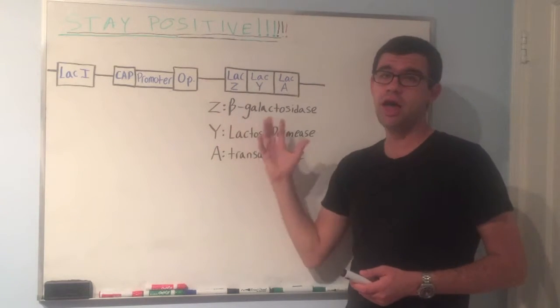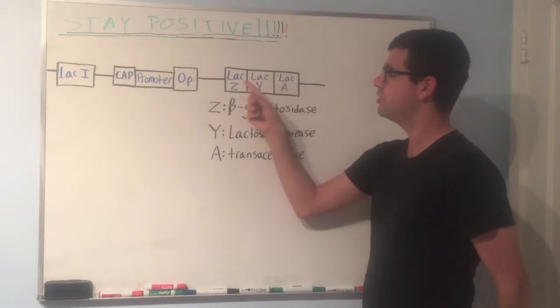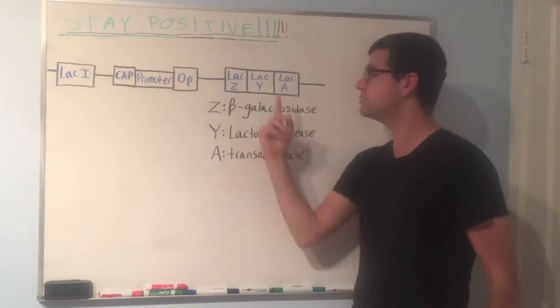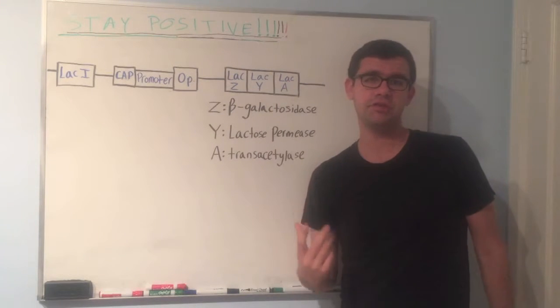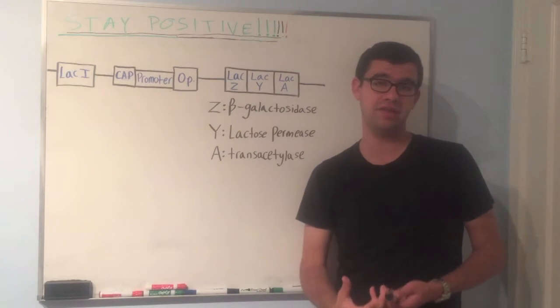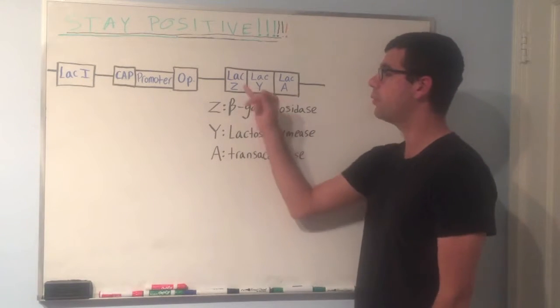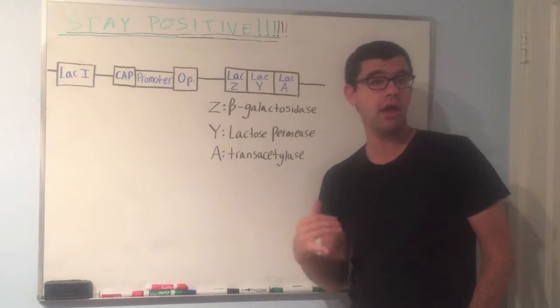And so these three genes are really important when it comes to breaking down lactose. But remember, this is an inducible operon, which means we don't want to be expressing LAC-Z, LAC-Y, and LAC-A all the time. We only want to express these when the concentration of lactose is very high in the cell, when there's a lot of stuff to break.